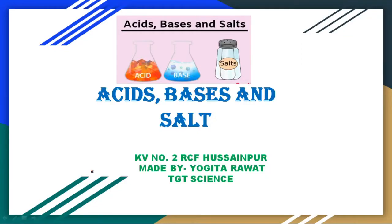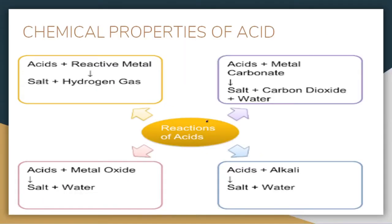Hello students, this is part 2 of the chapter acids, bases and salt. In the previous video, we have seen chemical properties as well as physical properties of acid. We will talk about 4 more chemical properties given in your NCERT book of acids, and we will understand these chemical properties one by one with the help of activities given in your book. Let's start and see the activity which is about how acids react with metals.